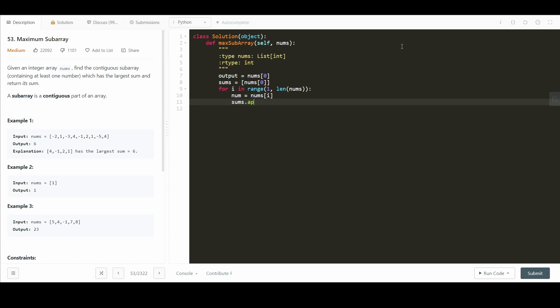So we say sums.append maximum value of num or sums at i minus 1 plus num. So there's our algorithm there and then we just check if sums at i is greater than output output equals sums at i.